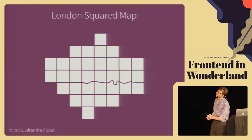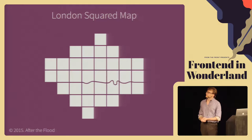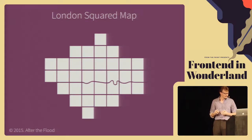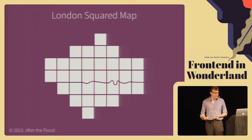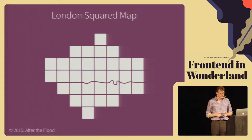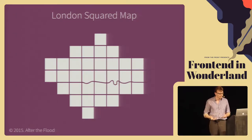This is the London Squared map by After the Flood. When I first saw it, I did not think it was a map. But actually, you can really see that the context comes from road labels and icons. You can see the Thames through London. It really does show that if you have got the context, then that makes it a map. Most people from London can kind of tell where the regions are.